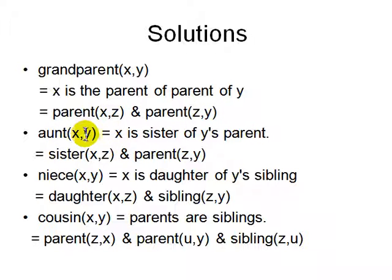Aunt is defined as x is an aunt of y if x is a sister of y's parent. So we need sister and parent. Y is a child of z, and z and x are sisters.